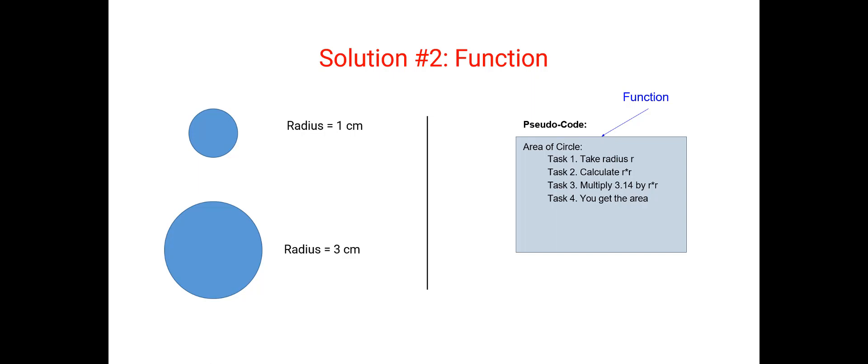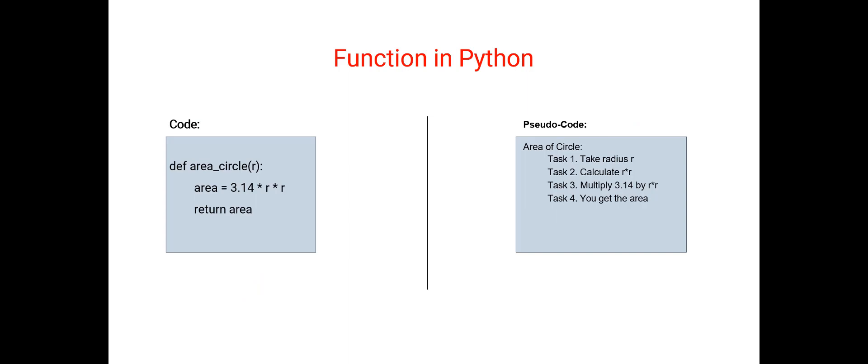Now if you haven't already realized, this is actually how a function works. Let's see how you can write this in code. So this is a Python code. In just three lines of code, you will be able to execute this entire pseudocode. And the advantage of this structure that we call function in this case is that you can call this piece of code anytime in your program with any value of r, and you'll always get the area for that circle.